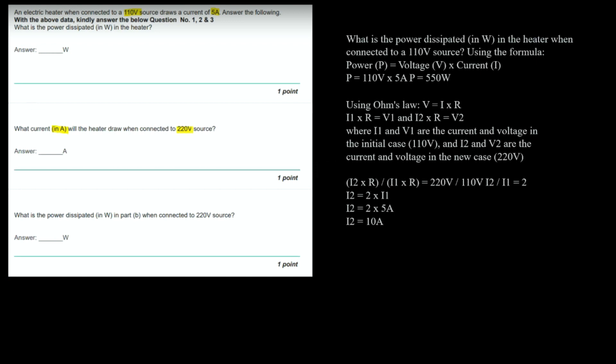Moving on: What is the power dissipated in part B? We use the value of I2 = 10 ampere at the 220 volt source. Using the formula P = V × I: P = 220 × 10 = 2200 watt. So 2200 watt will be the answer.